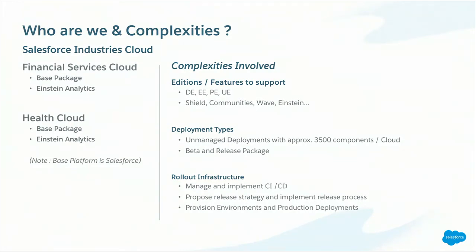In order to support this cloud, there are a lot of complexities involved. ISVs are now using different editions in combination with the cloud — developer edition, enterprise edition, professional, and unlimited edition. They're also using a lot of Salesforce features such as Shield, Communities, Wave, and Einstein. Developers are using different deployment types like unmanaged deployment. Each app has approximately 3,500 components per cloud, and we also deal with packages such as beta packages and release packages.